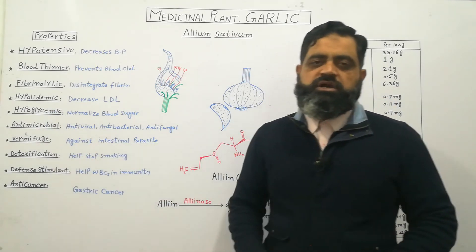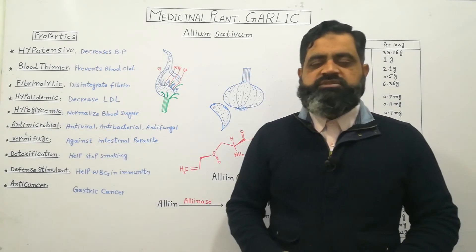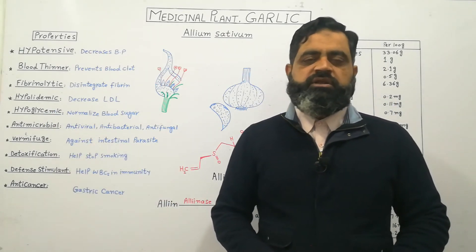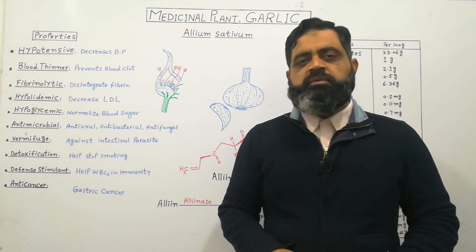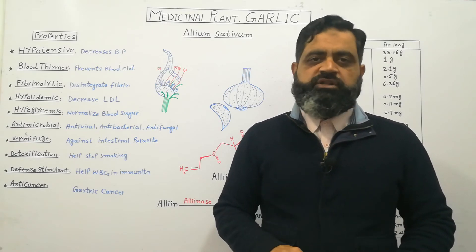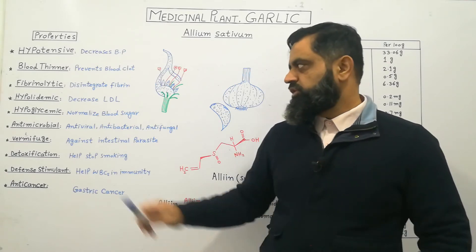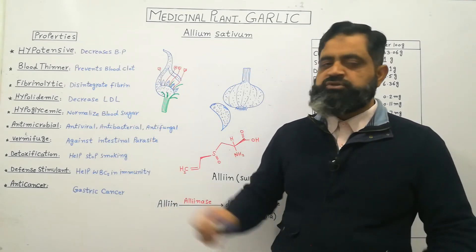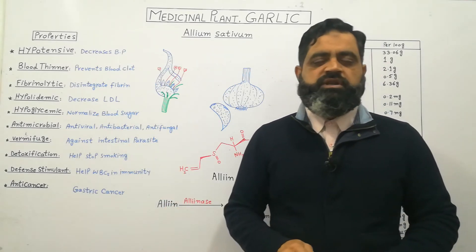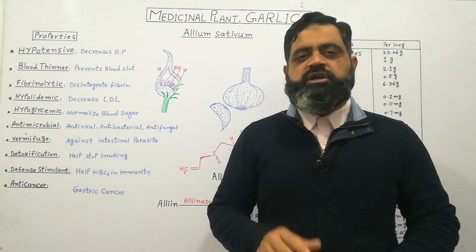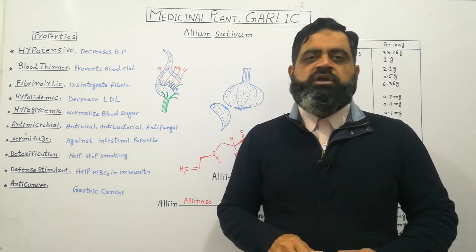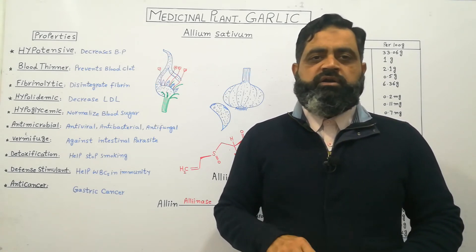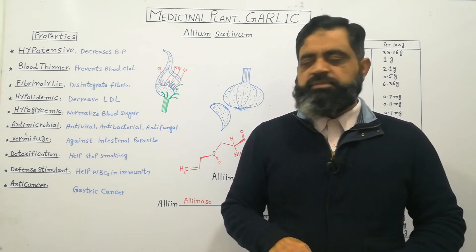Garlic is also hypoglycemic — it maintains normal blood sugar levels in your body. It normalizes blood sugar, and any person having type 2 diabetes can take raw garlic to normalize their blood sugar.